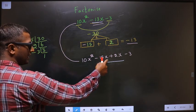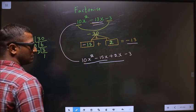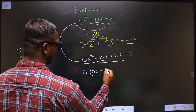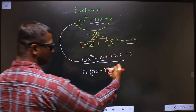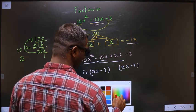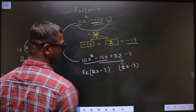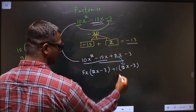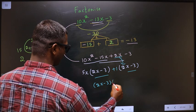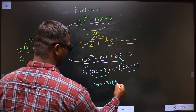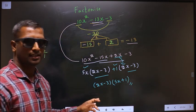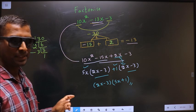Next, what can you take out common from the first two terms? It is 5x. So here I get 2x and here I get 3. Whatever you got here, you should get the same thing in the next group. From the second group, 2x has gone inside, so outside you get plus 1. Now take 2x minus 3 common, so here you get 5x and here you get plus 1. This is the answer: (2x minus 3)(5x plus 1).